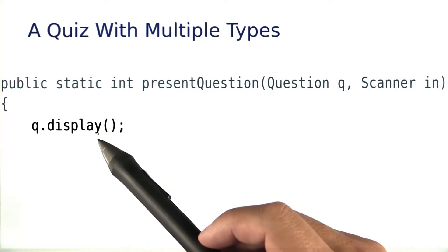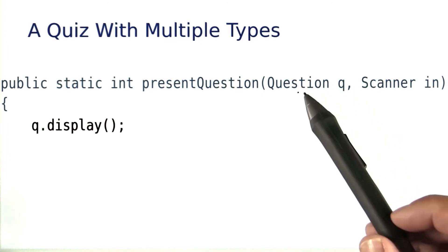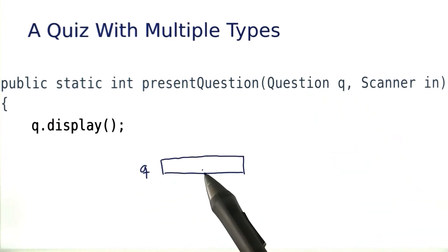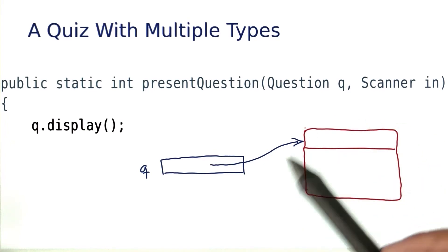We've just talked about which display method gets called in the presentQuestion method. The method has a parameter whose type is Question. Here is the parameter variable. It contains an object reference which points to an object.